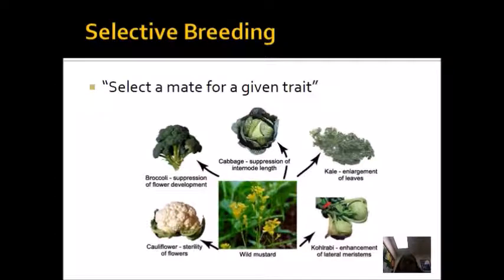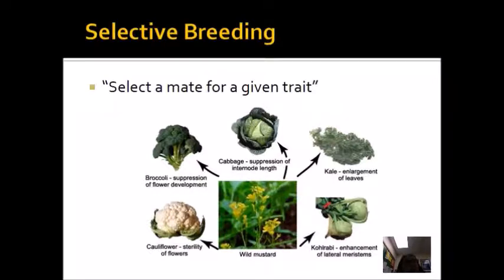Last but not least, selective breeding is how humans have manipulated evolution by selecting a mate for a given trait. Looking at wild mustard, we've selected breeding patterns in agriculture over hundreds of years to produce cauliflower, broccoli, cabbage, kale, and other varieties. We've done this with different dog breeds too — all dogs are the same species, but we've selected mates for given traits to make a variety of different breeds. Selective breeding provides evidence for evolution: humans select a mate for a given trait to end up with the desired population.